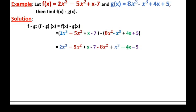I've given the like terms the same color. 2x to the power of 3 is like with x to the power of 3; minus 5x squared is like with minus 8x squared; x is like with minus 4x; and minus 7 is like with minus 5. Let's group the like terms together and operate them.